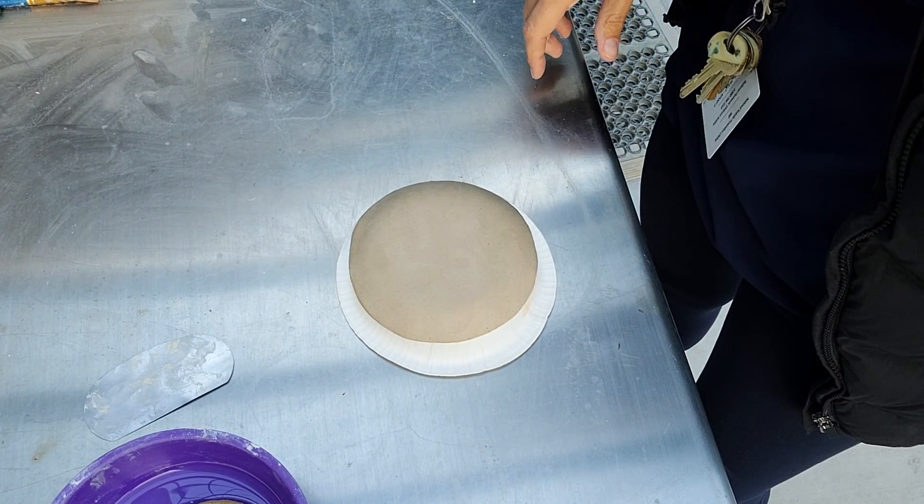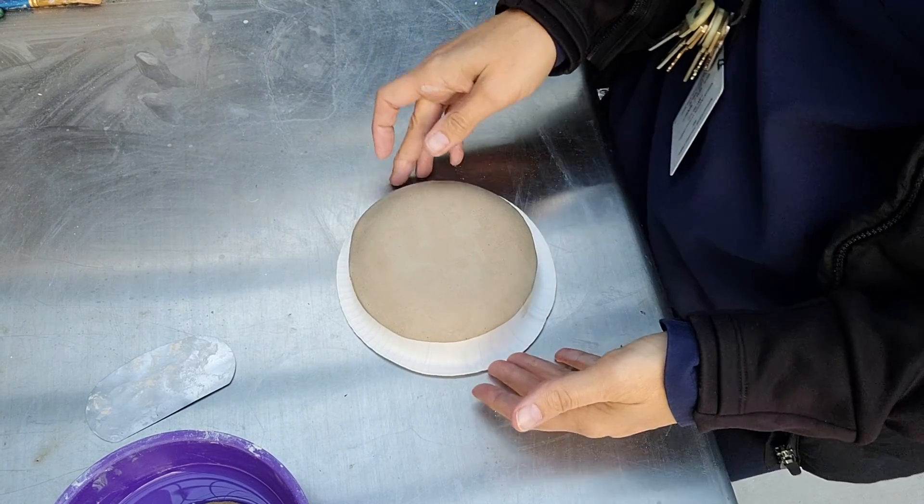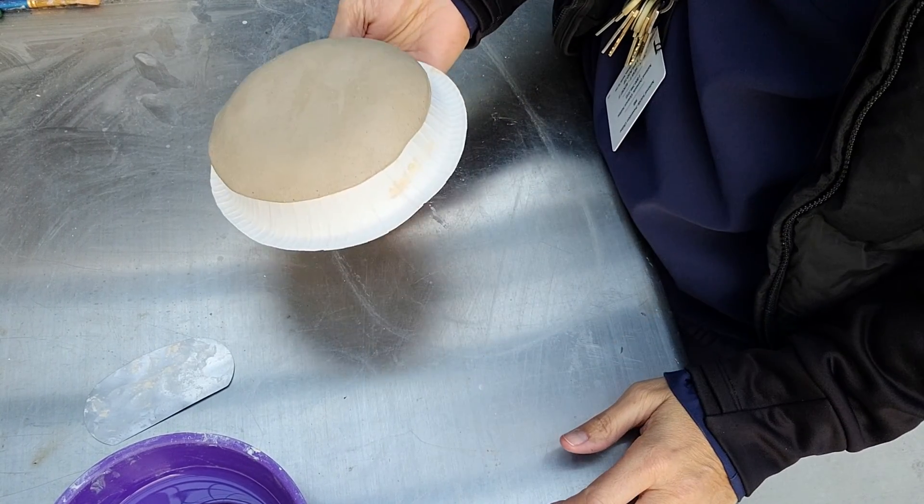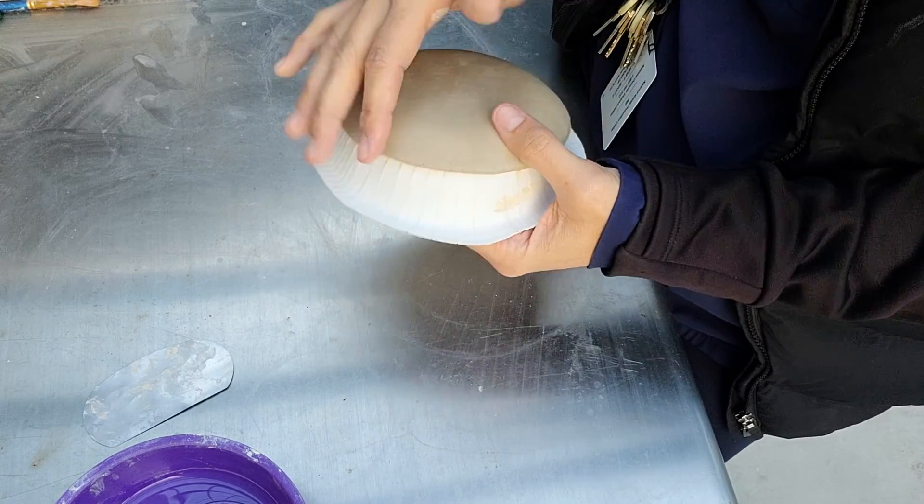Alright friends, we are on day two of our hump and slump mold project. This is what your project should look like on day two. Whether you've used the outside or the inside of something that already exists, it should have lost a little bit of its moisture.